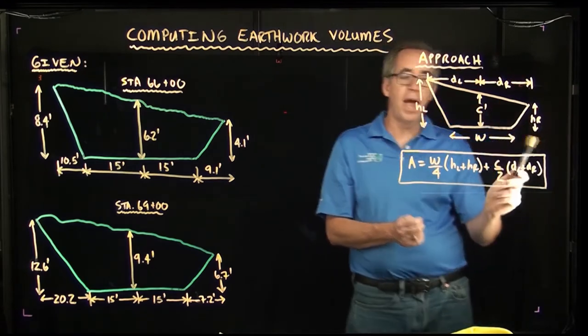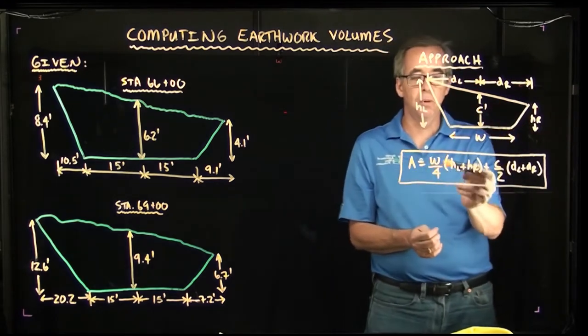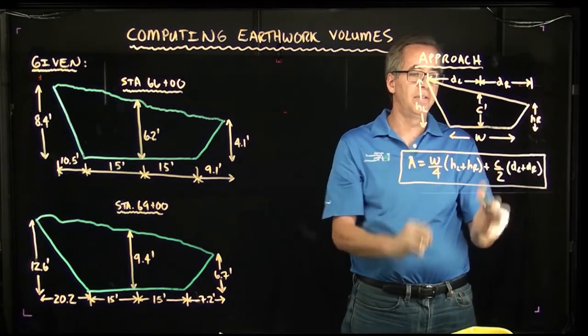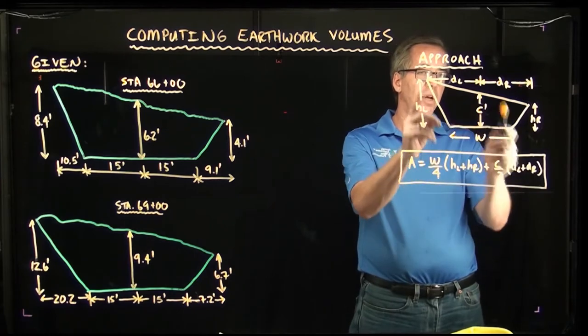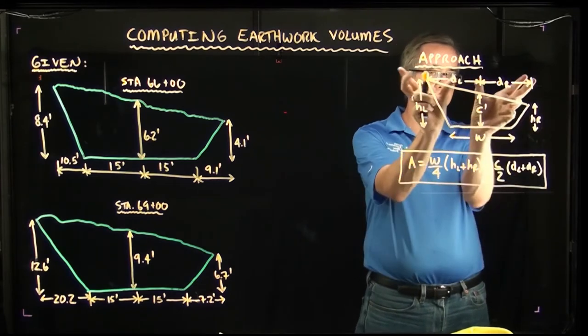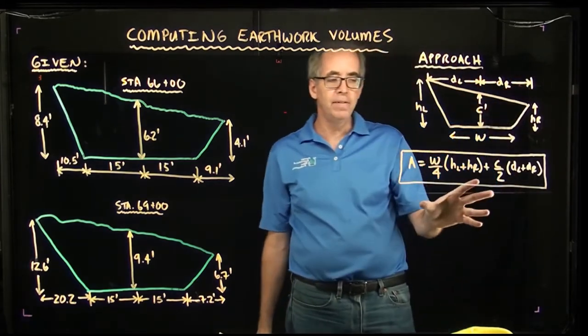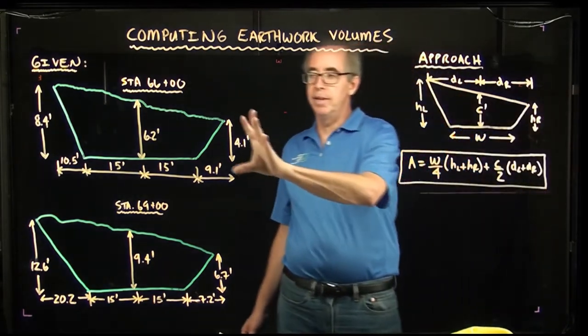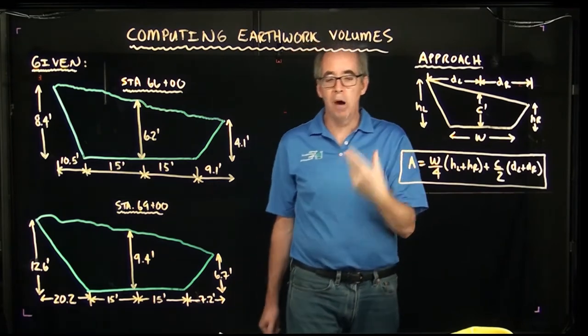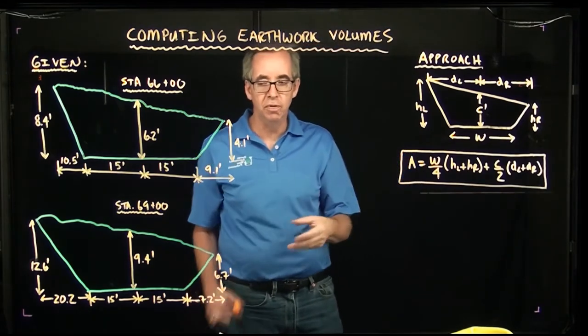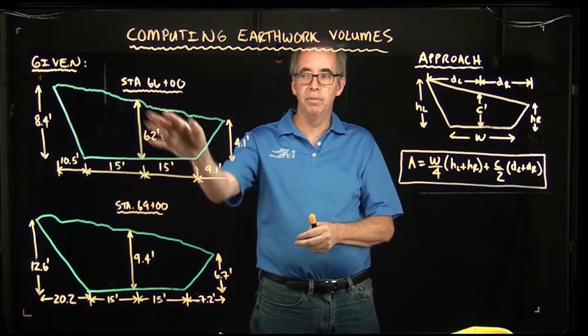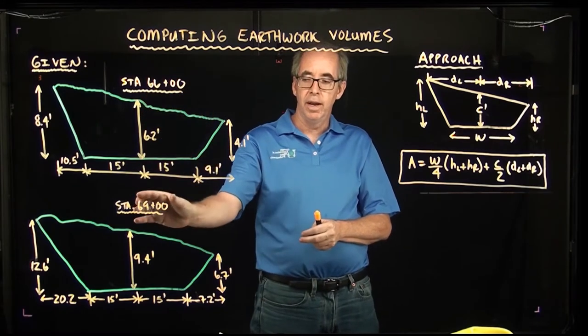Essentially with that you can calculate the area using this formula where you have the width over 4 times the sum of the two heights plus the center height over 2 times the sum of the two widths on the top. So basically we're going to take this formula and apply it to these cross sections and figure out how much volume we would have to remove based on these two cross sectional areas and a distance of 300 feet between stations 66+00 and 69+00.